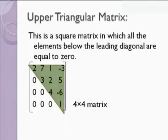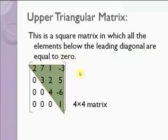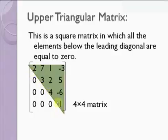What is the upper triangular matrix? This is a square matrix in which all the elements below the leading diagonal are equal to 0. If we have a square matrix, let us consider this matrix — the leading diagonal is 2, 3, 4, 1. This is the leading diagonal, and it says that all the elements below this leading diagonal are equal to 0.